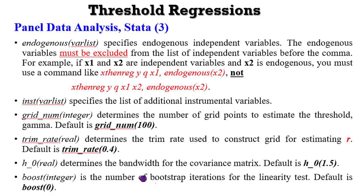You may also want bootstrap iterations to test for linearity in the model. When you include the bootstrap option, by default the bootstrap is 0, and you will have the results for the bootstrapping iterations.